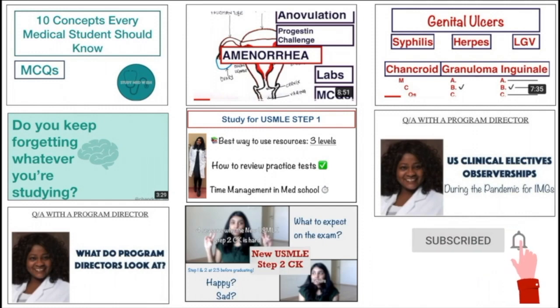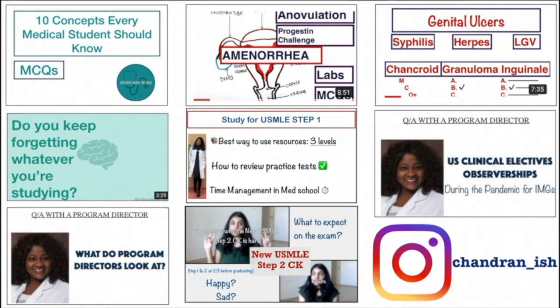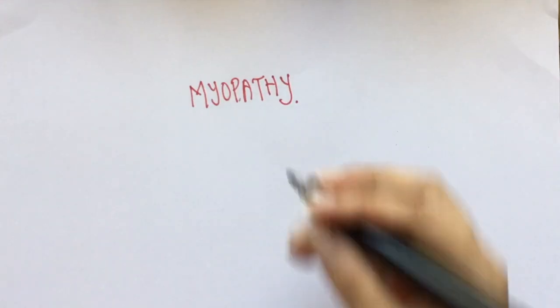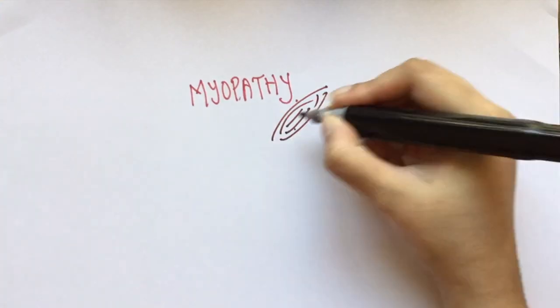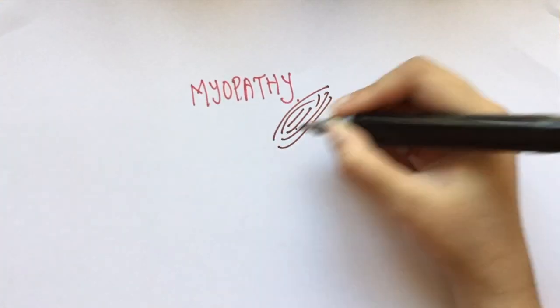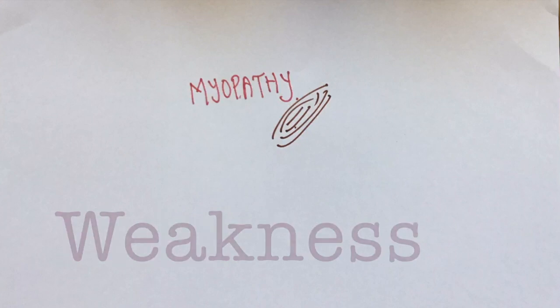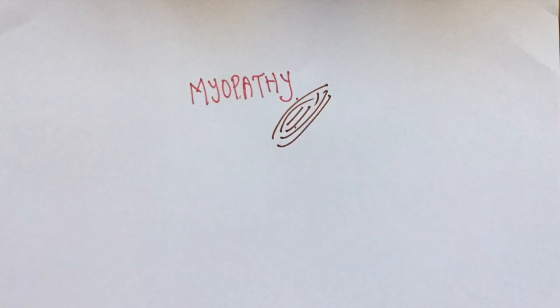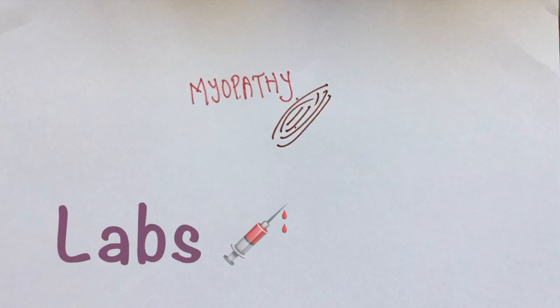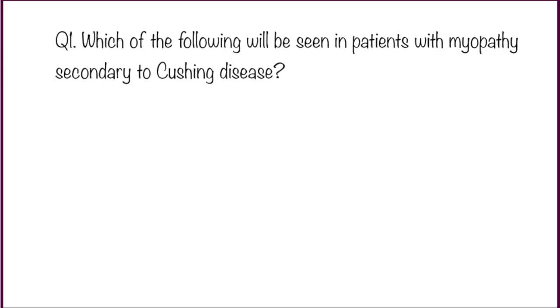Myopathy basically refers to diseases that affect the muscles of our body. They usually present with muscle pain or weakness. We can differentiate one from another based on history, symptoms, and labs. So let's get to the first one by solving this question.